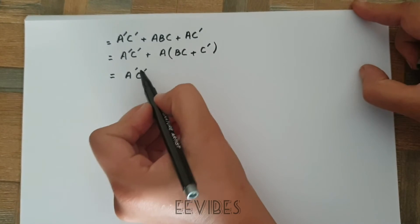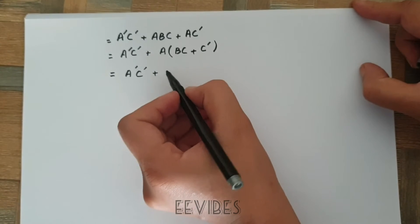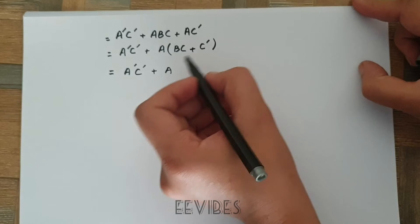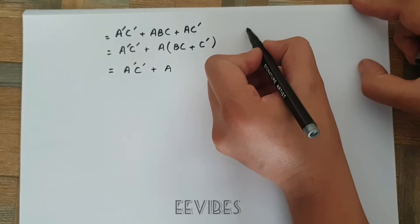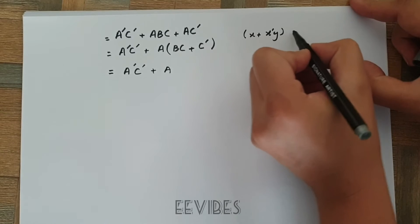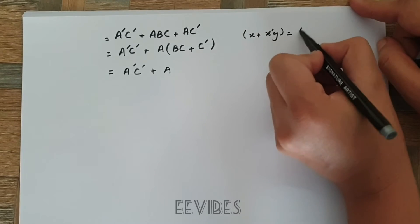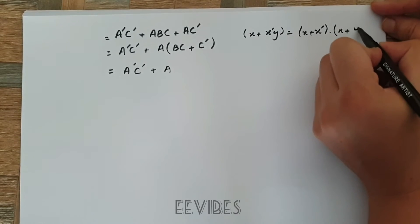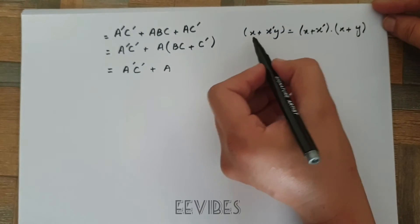The next step is to apply the distributive law on this expression. According to the distributive law, you can write it as x plus x complement y equals x plus x complement into x plus y. So this is basically the distributive law over multiplication.